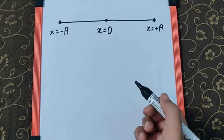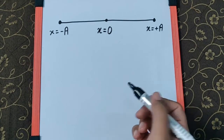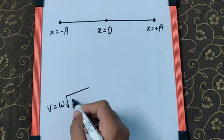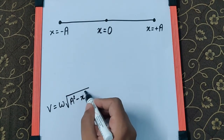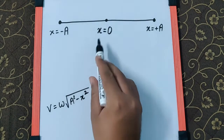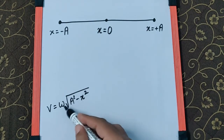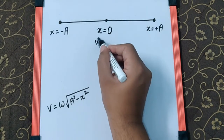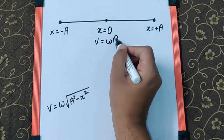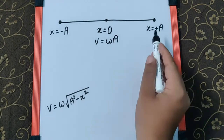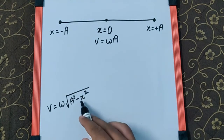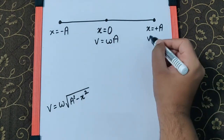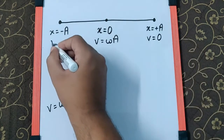For velocity, the formula is v = ω√(a² - x²). If we put x = 0, we get v = ω√a² = ωa, so velocity is ωa at the mean position. If we put x = ±a, it becomes a² - a² = 0, so velocity is zero at the extreme positions.